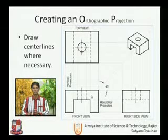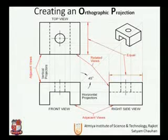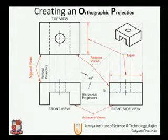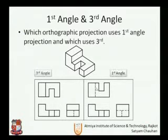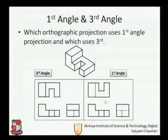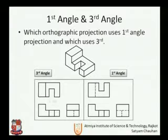We also covered the different types of lines and their applications in orthographic projection — for example, the dotted line, called the hidden line. We also saw the difference between first angle and third angle projection using an animated object. In first angle projection, the front view is above the XY line and the top view is also above the XY line. In third angle projection, the front view is below the XY line and the top view is above the XY line.